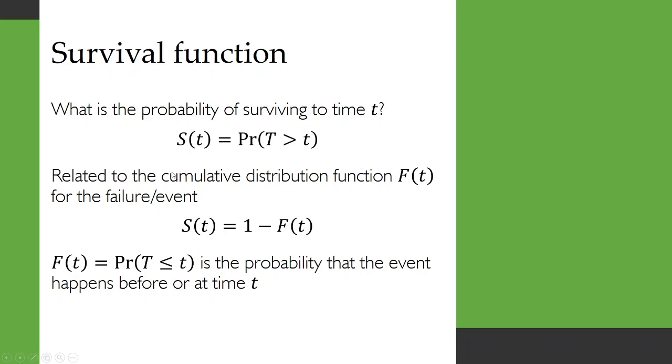This is related to the cumulative distribution function capital F(t) for the failure or event of interest. So S(t) is equal to 1 minus capital F(t). That's because capital F(t) is the probability that T is less than or equal to t, the probability that the event happens before or at time t.